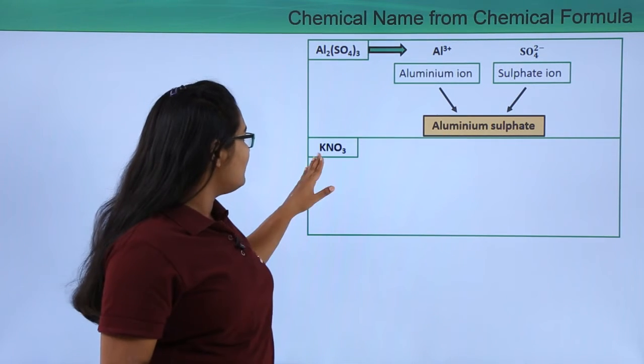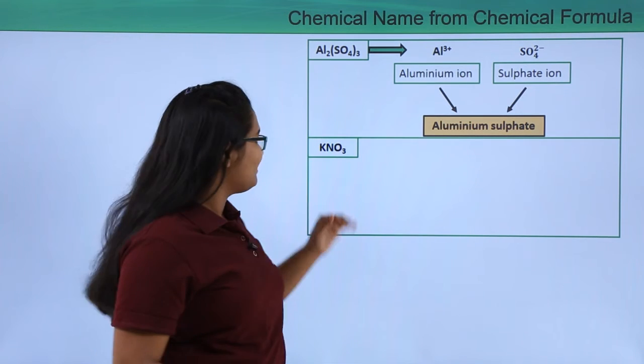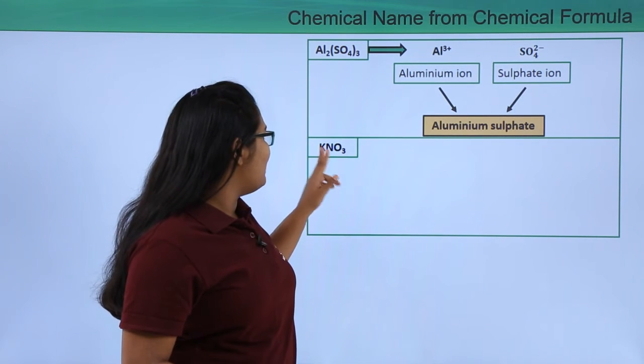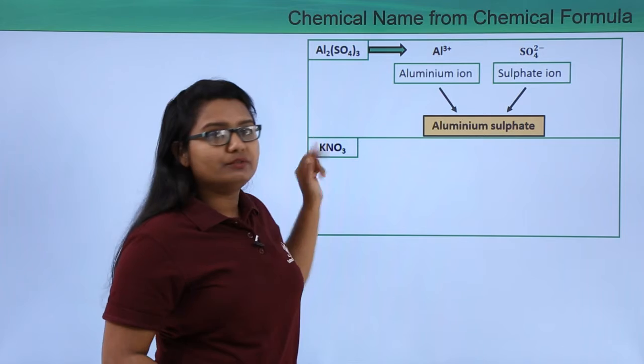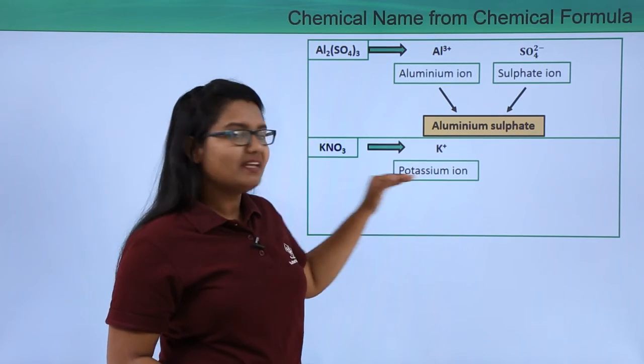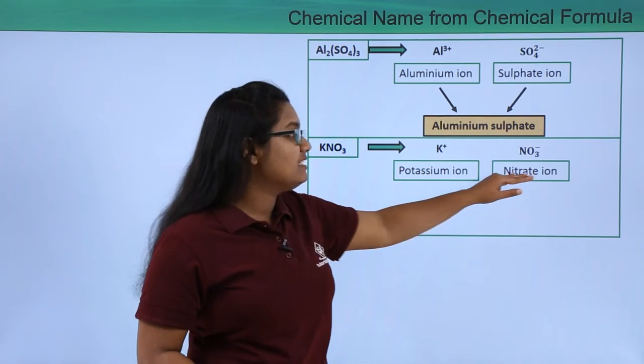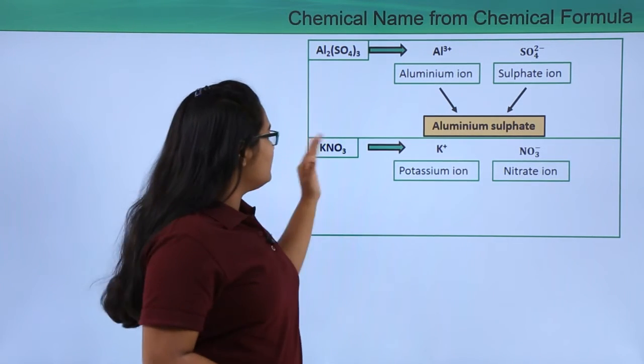Now here I have KNO3, let's name this compound. Now here the compound has K and NO3 and we know that K stands for potassium and NO3 is a polyatomic ion which is called a nitrate ion.